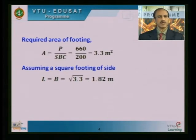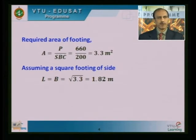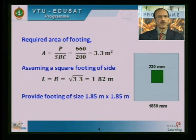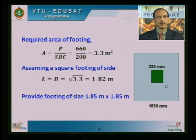Since the given column is square, we can also assume a square foundation, as we always try to match the type of foundation with the type of column. The side of the square footing is the square root of the area, which is 1.82 meters. It is preferable to round off to a higher number in terms of 0.05 or 0.1, so I am taking a footing of size 1.85 m by 1.85 m. The outer square represents the foundation in plan at 1850 by 1850 mm, and the inner square represents the column at 230 mm by 230 mm.